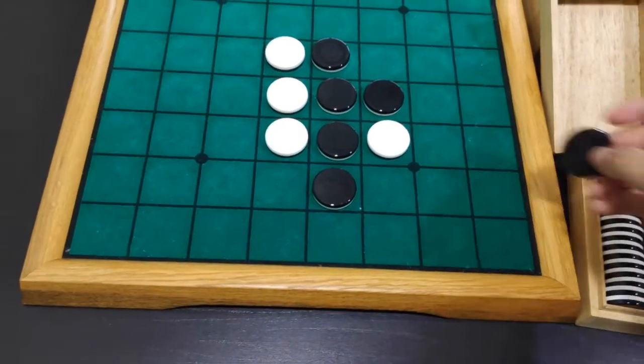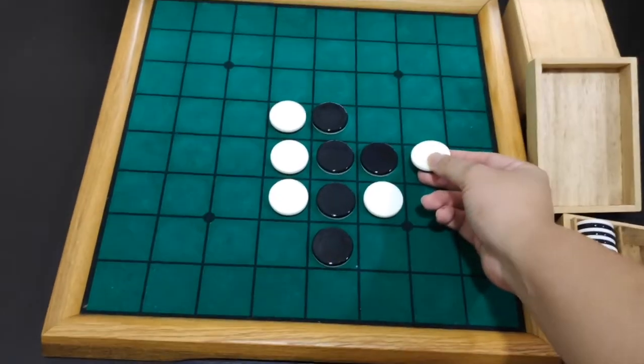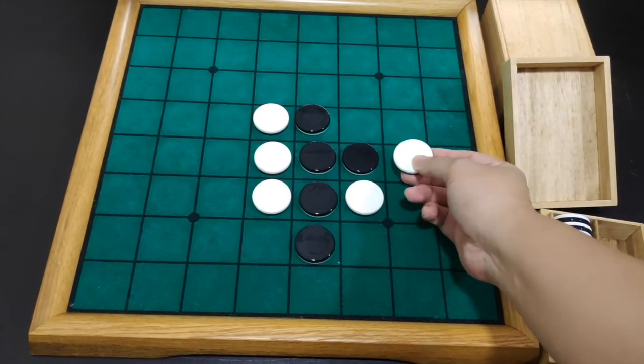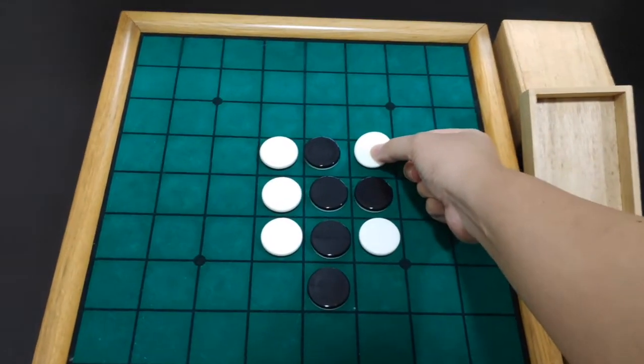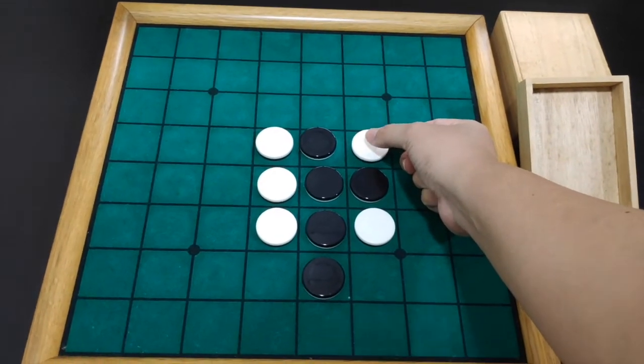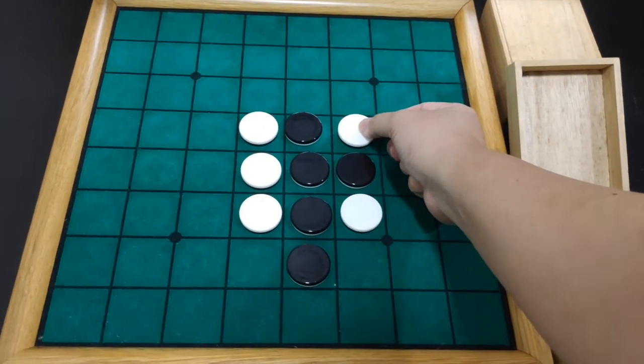So over here we've covered the rotated sailboat opening and also the Ben Sealy counter Heath variation. And now we're going to talk about the Heath Chimney which follows up with this move to F4 over here.